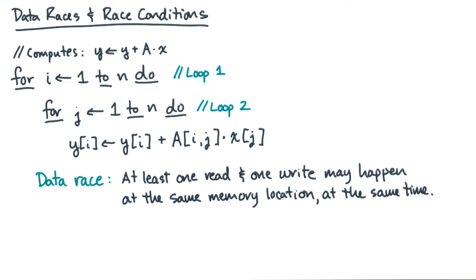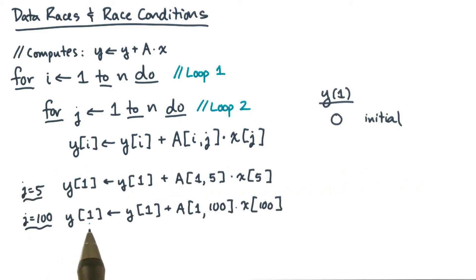So let's take two iterations j as an example. Let's assume that i equals 1, and let's look at j equals 5 and j equals 100. Furthermore, suppose that y sub 1 has the initial value of 0. Now suppose I start executing the two statements simultaneously, evaluating both multiplications at the same time, and maybe hypothetically I get the values 72 and minus 100.